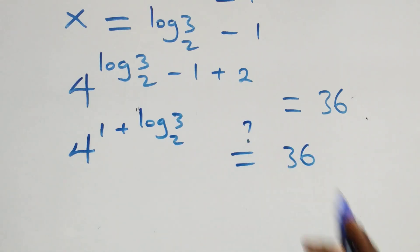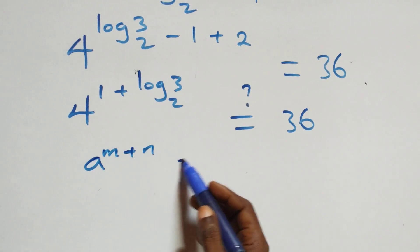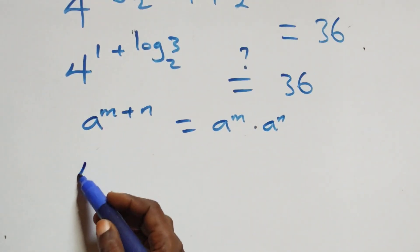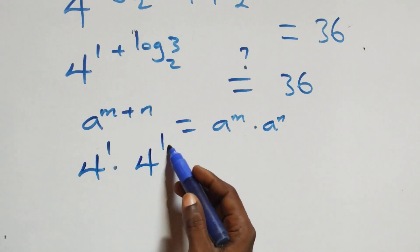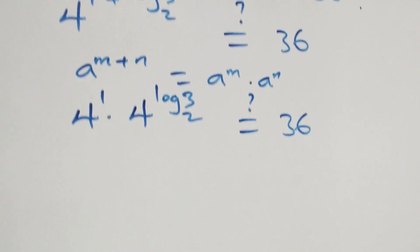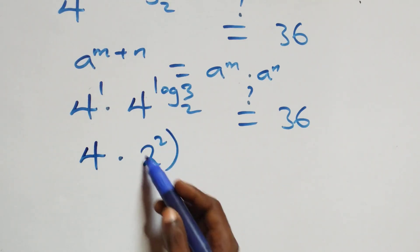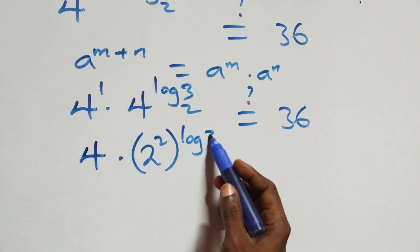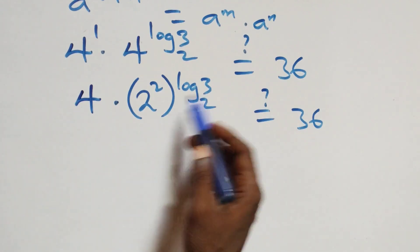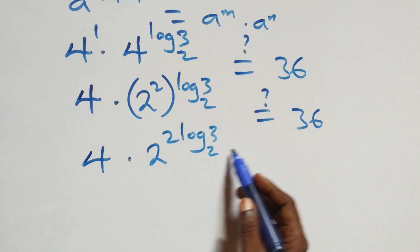We apply the indices rule: a raised to the power n plus n equals a^n times a^n. So 4 raised to (1 + log₂(3)) becomes 4 raised to the power 1 times 4 raised to the power log₂(3). We express 4 as 2 squared, giving 4 times (2 squared) raised to the power log₂(3). The powers multiply to give 4 times 2 raised to the power 2·log₂(3).